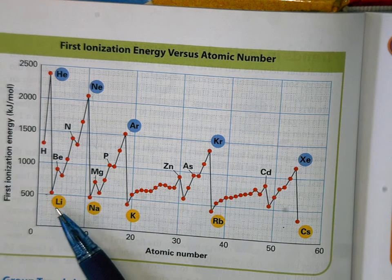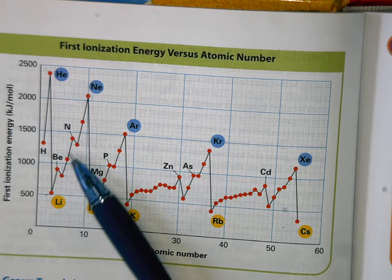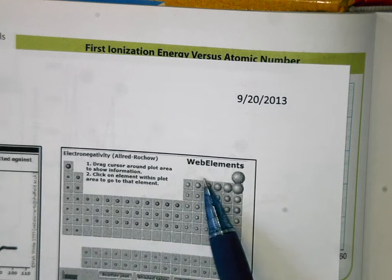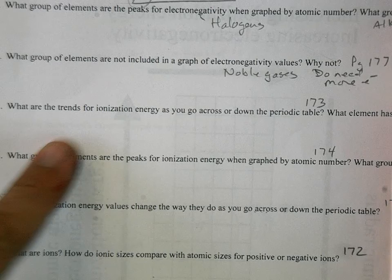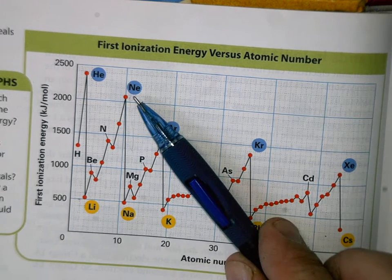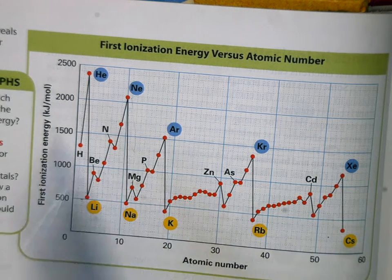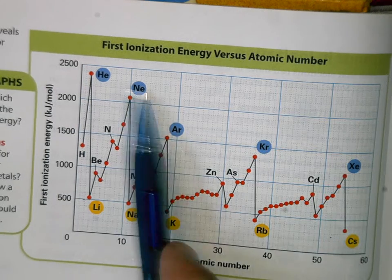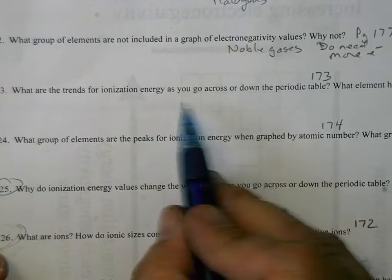Lithium on the left side of the table wants to get rid of electrons — it takes only 500 kilojoules per mole. You get little blips in the trend, but more or less: as you go across the table, ionization energy gets higher. The noble gases are the highest — to ionize neon takes 1200 kilojoules per mole. That's a lot compared to metals at 500 to 1000. The trend as you go across: ionization energy goes from low to high.